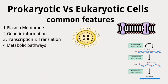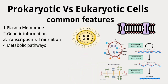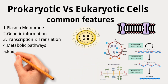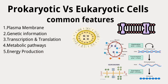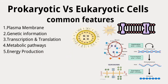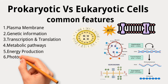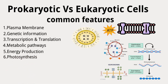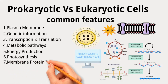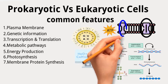Both cell types utilize similar structures to produce chemical energy in the form of ATP, found in the plasma membrane of prokaryotes and the mitochondrial membrane of eukaryotes. Similar mechanisms for photosynthesis exist, especially between cyanobacteria and green plants. They also share a common mechanism for manufacturing and integrating membrane proteins.